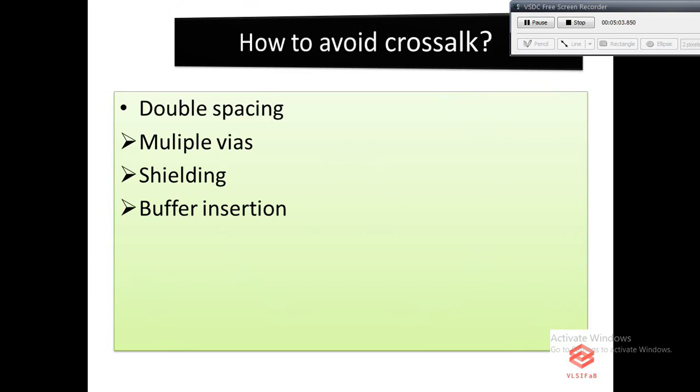Multiple wires: by using multiple wires, promoting the victim nets to the upper layer, we can reduce the crosstalk.